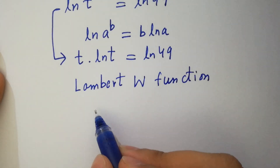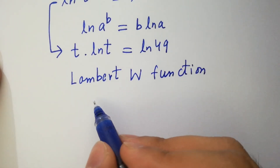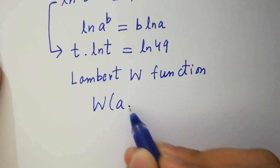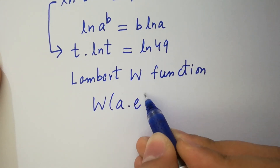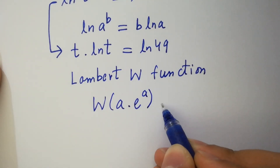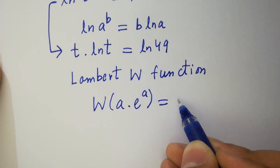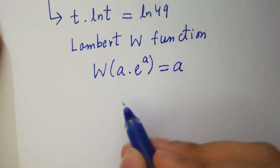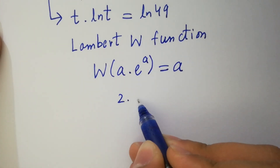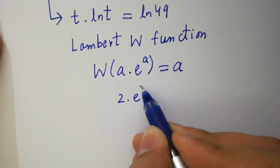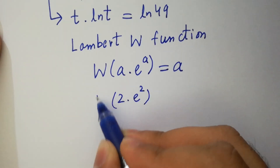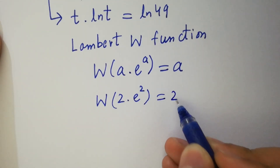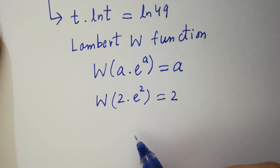Let's apply the Lambert W function, which states: W(a · e to the power a) equals a. For example, if you have 2 times e to the power 2 and apply the Lambert W function, it equals 2. I hope you understood.